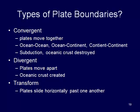Convergent plate boundaries are where we have two plates colliding, coming together. Those two plates can be ocean and ocean, ocean and continent, or continent and continent plates colliding into one another. In the scenario where we have oceanic crust colliding, we end up with subduction. The oceanic plate is heavier, it's denser, it sinks and is forced down below that lighter crust and gets destroyed.